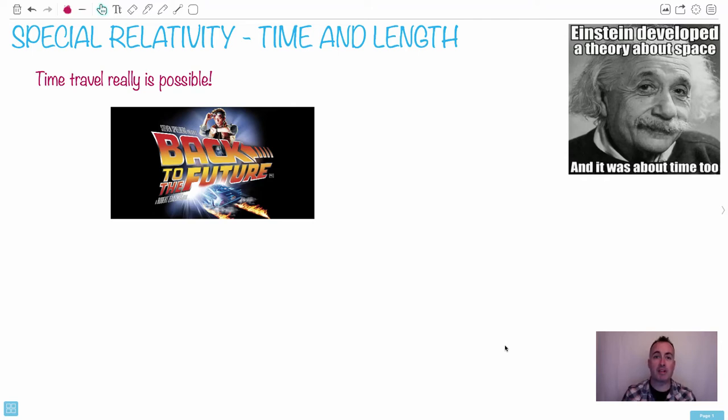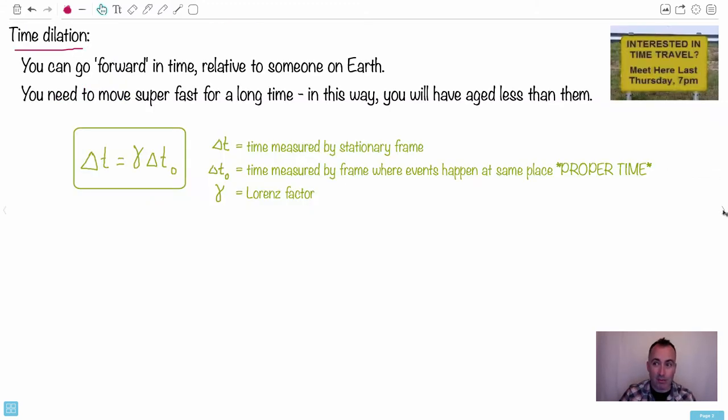Now we come to the part of special relativity that gets really awesome. We start to learn how time travel is possible. I like this picture from Back to the Future - what a good movie that was, an 80s movie with Michael J. Fox. Awesome movies. We're going to talk about what relates to Einstein here. Einstein developed a theory about space and it was about time too. So we're going to learn how time travel really works.